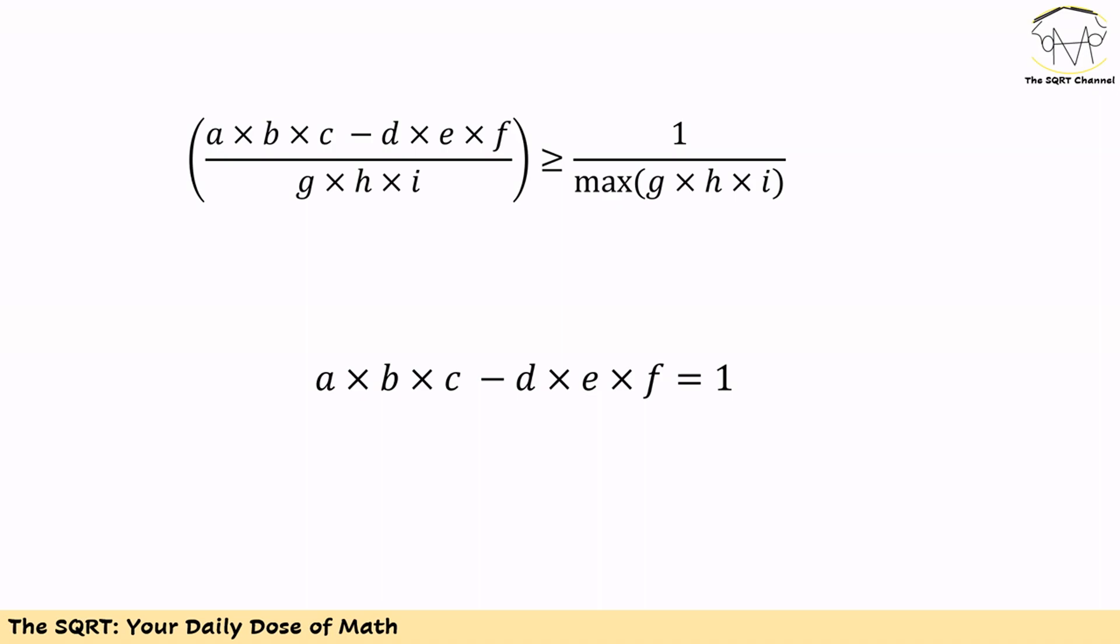So here let's focus on the top of the fraction. We have A times B times C minus D times E times F. To minimize it, this value should be equal to 1.